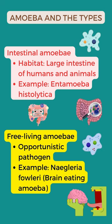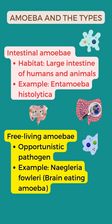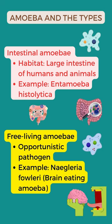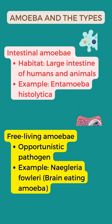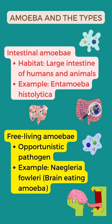The second group are free-living amoeba. These are small free-living and opportunistic pathogens. A good example is the brain-eating amoeba, which is also known as Naegleria fowleri.